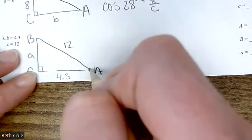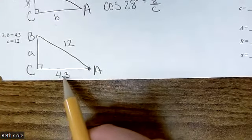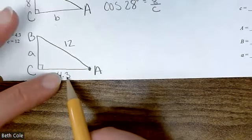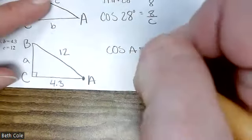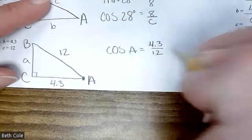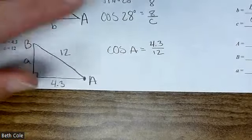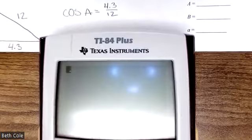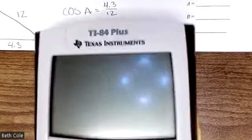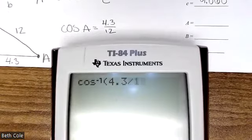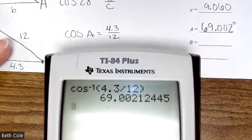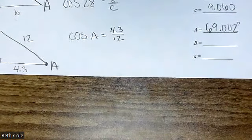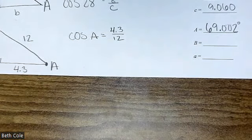So that means 4.3 is the what? Adjacent good. And 12 is hypotenuse. So adjacent and hypotenuse means cosine. So cosine of A equals 4.3 over 12. Now that's a little different. How will I type that one? Inverse, good vocabulary. How do I type an inverse? Like what actual button on here? Your second cosine. You'll put cosine inverse on there. 4.3 divided by 12. I got 69.002 degrees.